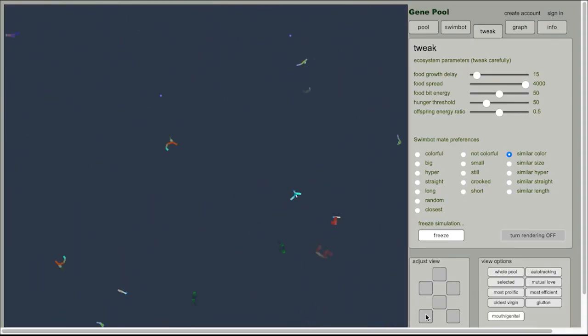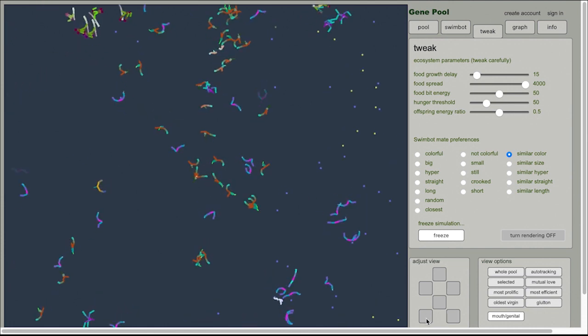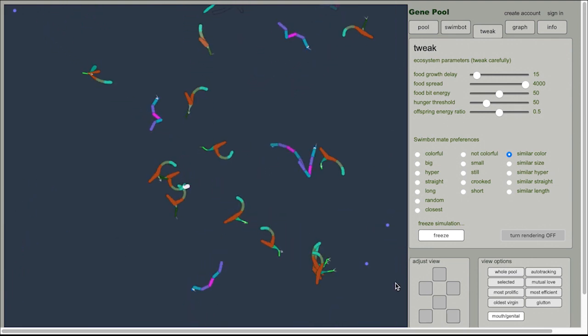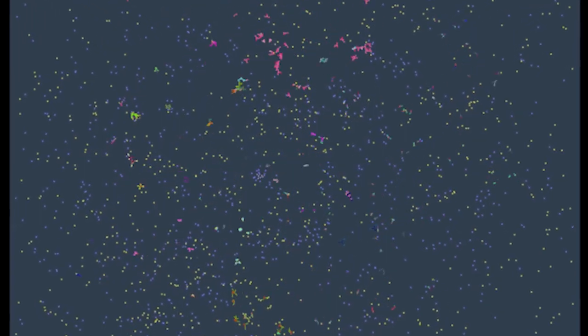So we implemented these mechanisms in GenePool. For example, stabilizing coexistence was added to our world by making two types of food instead of just one, along with adding genes that allow swimbots to evolve a preference and ability to eat those different types of food. And so for the first time, swimbots were able to evolve from the primordial ocean into two successful and coexisting species. The start of biodiversity as we know it.